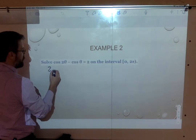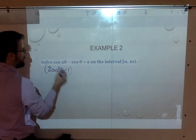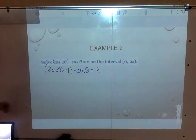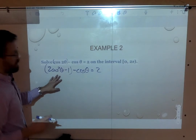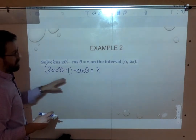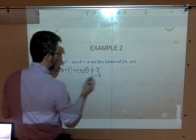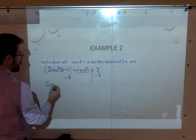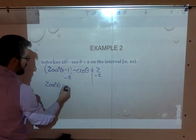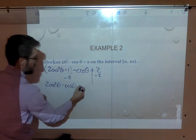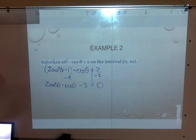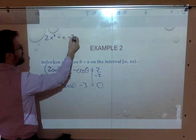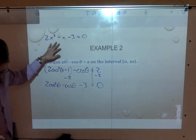So I replace cosine of two theta with two cosine squared theta minus one, giving the equation two cosine squared theta minus one minus cosine theta equals two. This is a quadratic, so I set one side equal to zero by subtracting two from both sides and rewriting in standard form: two cosine squared theta minus cosine theta minus three equals zero. I can treat this as two X squared minus X minus three equals zero, which is a factorable quadratic.